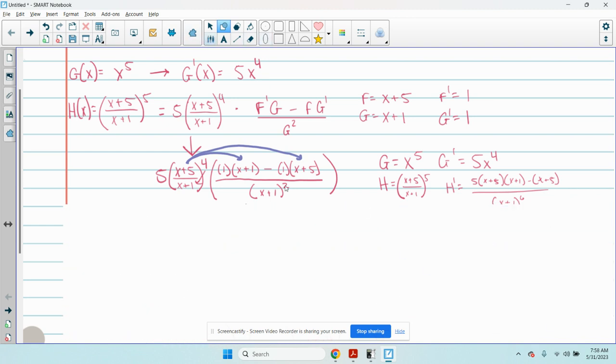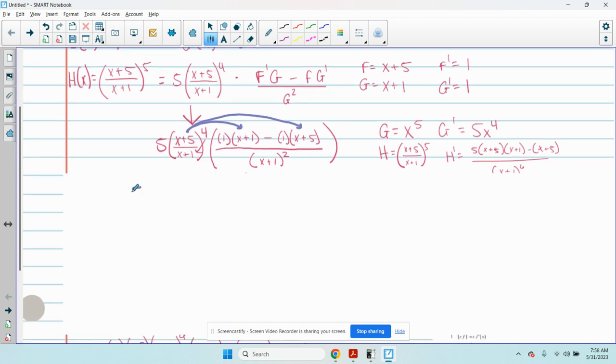So if you look at this thing, I'm going to rewrite this first part. 5 times x plus 5 over x plus 1 to the fourth. This is x plus 1 minus x minus 5 over x plus 1 squared.